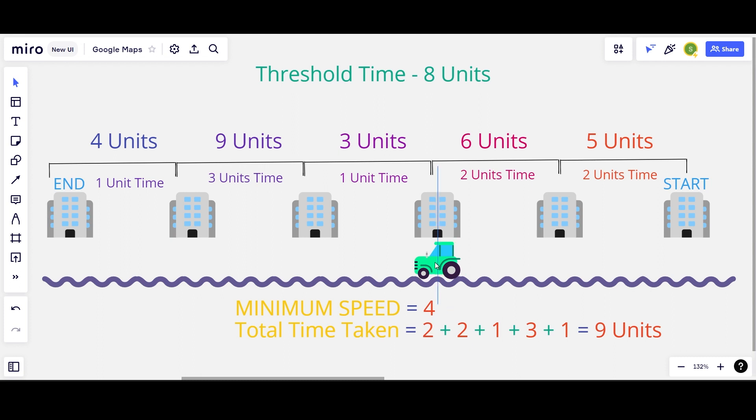We can cover the next 3 units distance in 1 unit time. We can cover the next 9 units distance in 3 units time and finally we can cover the last 4 units distance in 1 unit time. Hence the total time taken is 9 units which is more than our threshold of 8 units. So 4 units speed cannot be the minimum speed possible to make the entire trip.